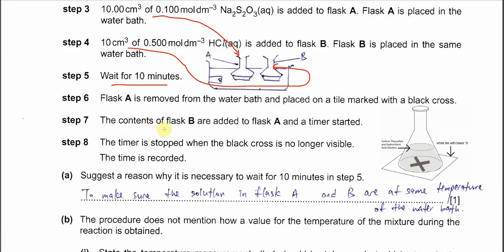The contents of flask B are added to flask A and the timer starts immediately. The timer is stopped when the black cross is no longer visible — the observer watches from the top. After the black cross is no longer visible, the timer stops and the time is recorded.